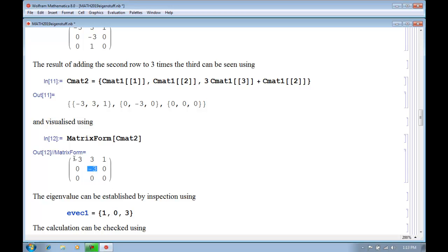And then the last equation will be minus 3 times the first element is equal to the third element. So we might as well make the third element 3. And there we have it. So that's our eigenvector.